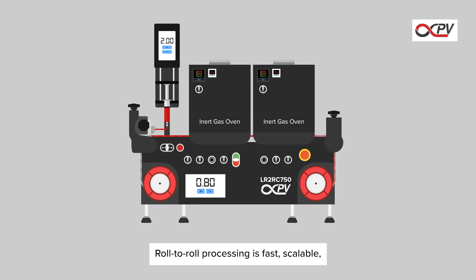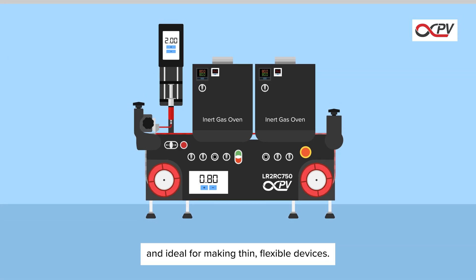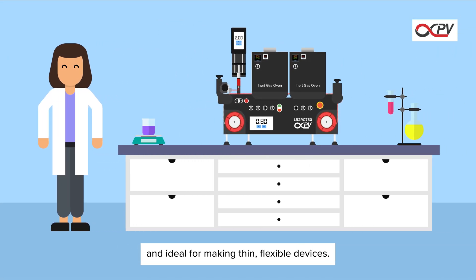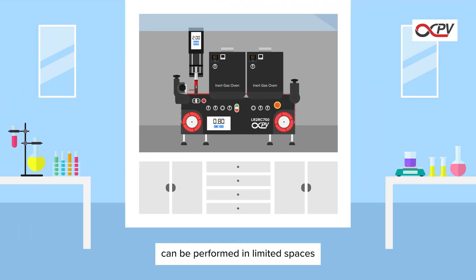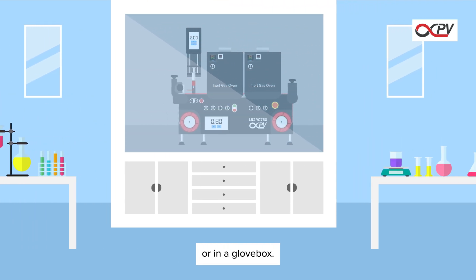Roll-to-roll processing is fast, scalable, and ideal for making thin, flexible devices. With compact systems available, the entire process can be performed in limited spaces, such as a fume hood or in a glove box.